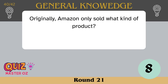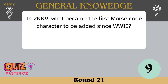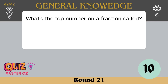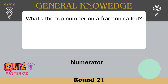Originally, Amazon only sold what kind of product? Books. In 2009, what became the first Morse code character to be added since World War 2? The at symbol. What's the top number on a fraction called? The numerator.